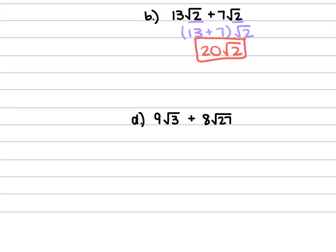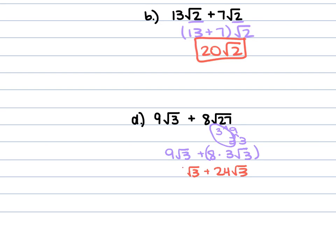For part D, we have 9 square root of 3 plus 8 square root of 27. The square root of 3 is already simplified, but square root of 27 is not. 27 breaks down as 9 times 3, and 9 is 3 times 3, so we pull out a 3, making it 3 square root of 3. So 8 times 3 square root of 3 gives 24 square root of 3. Now the radicals are the same: 9 plus 24 is 33 square root of 3.